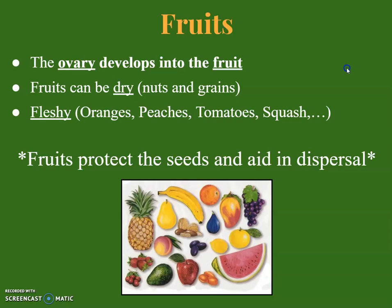The ovary can also develop into a fruit. Fruits can be dry, like nuts and grains, or fleshy, like oranges, peaches, tomatoes, and squash. The purpose of fruits is to protect the seeds but also to help in dispersal of those seeds. When organisms eat the fruit, they can release the seeds in other areas — for example, a bird eating watermelon seeds can deposit them elsewhere through its droppings, allowing those seeds to grow in a new area.